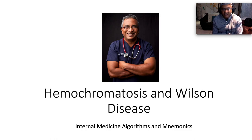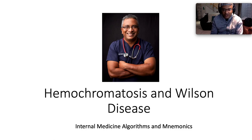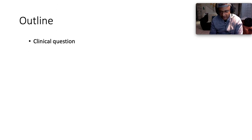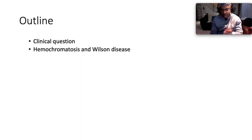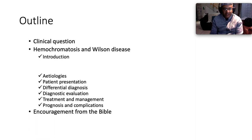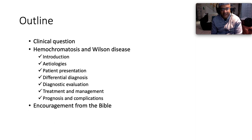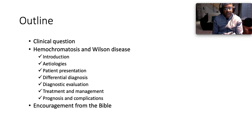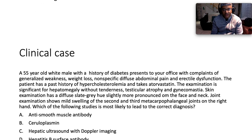Today we're talking about two of our metallic brothers which have plagued the liver for many years: hemochromatosis and Wilson disease. Here's the outline — we'll cover a clinical case, then look at both entities through seven cardinal headings: etiologies, patient presentation in terms of signs and symptoms, differential diagnosis, diagnostic evaluation, management modalities, prognostication, and complications. We'll end with encouragement from the scriptures.